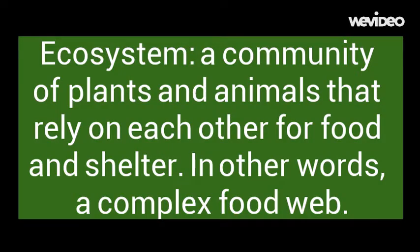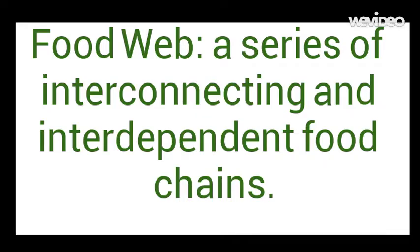So what happened? To understand how this ecosystem decline took place, you first have to understand how an ecosystem operates. An ecosystem is a community of plants and animals that rely on each other for food and shelter — in other words, a complex food web. A food web is a series of interconnecting and interdependent food chains.